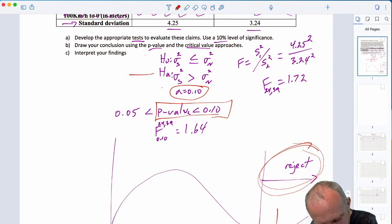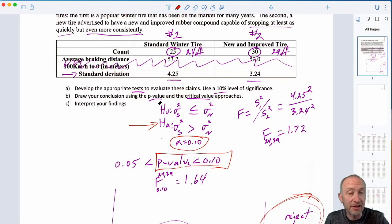Our evidence here supports the alternative which as it is stated means the variance of the standard tire is greater than the variance of the new and improved tire but I'm not going to word it like that. It's only written like that because of that constraint that we have to have the larger sample variance in the numerator.